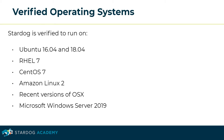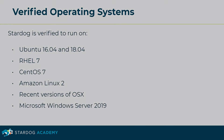You can get Java 8 or 11 from Oracle, or use a version from OpenJDK. Stardog has been verified to run on Ubuntu 16.04 and 18.04, Red Hat version 7, CentOS 7, Amazon Linux 2, recent versions of OS X, and Microsoft Windows Server 2019. This concludes the section about system requirements.